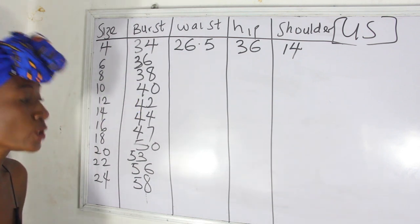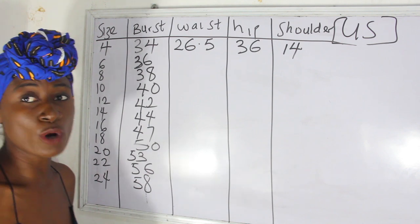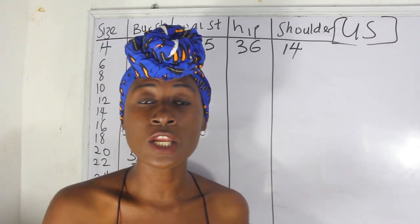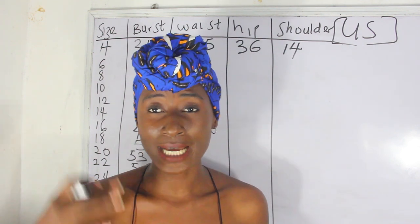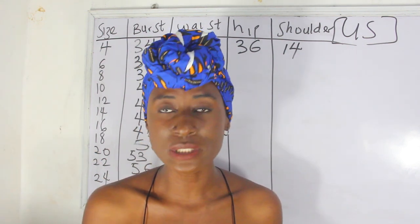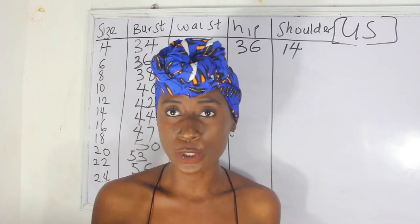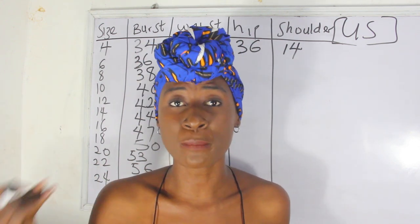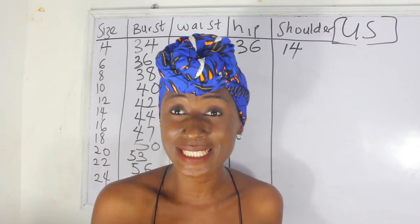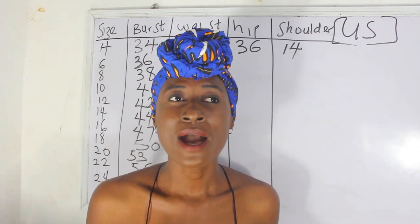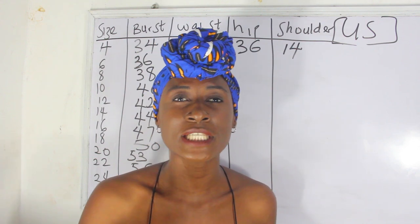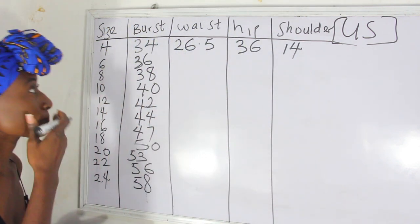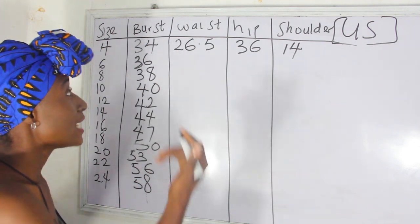Now let's move to the waist part. The waist is usually the smallest part of a female body. However, because many women go through childbirth and other health issues, there's a tendency that your waist might be bigger than your bust. This is not to say you have any inferiority complex — you should be proud of your body. You are a woman, you are beautiful, you are unique, your body shape is perfect.